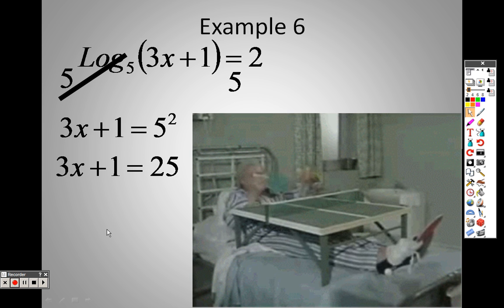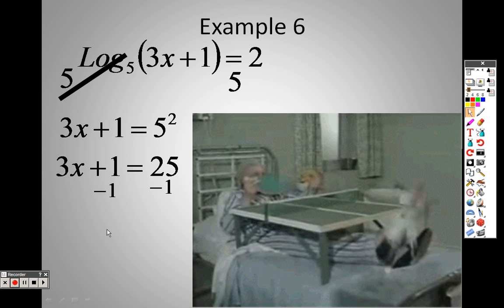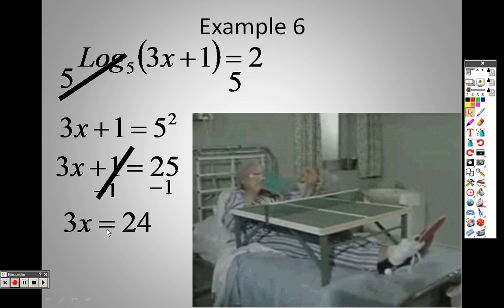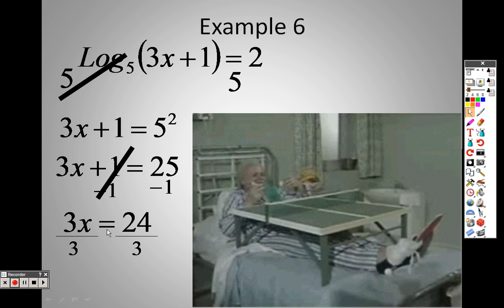So to solve that equation, that's very simple. We just subtract 1 on both sides, so I get 3x equals 24. Divide both sides by 3, and I get x equals 8 as my answer.